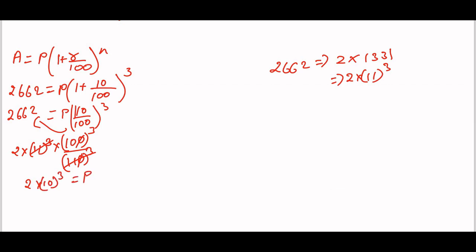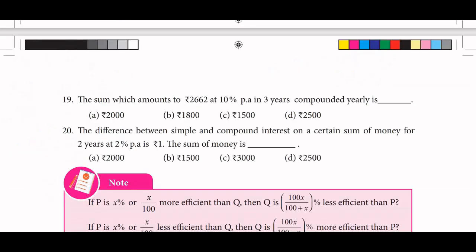Balancing the equation: 2662 equals 2 into 1331. Cancelling gives P equals 2,000. So the principal amount is ₹2,000. Option A.